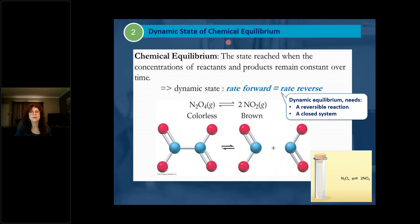What is the dynamic state of chemical equilibrium? Using the N₂O₄ ⇌ 2NO₂ reaction in a closed system, the stage is reached when the concentrations of the reactants and products remain constant over time. Dynamic equilibrium requires both a reversible reaction and a closed system.